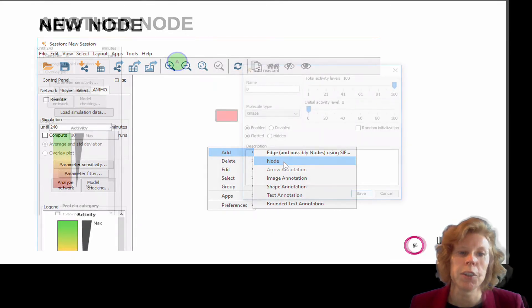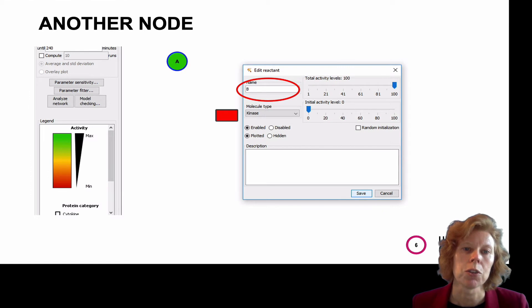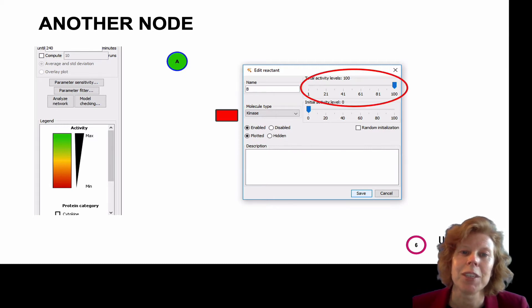Choose Add a Node. The name you can enter here could also be the actual protein name. You can then choose what type of molecule it is. Here I chose Kinase. We can set the total activity levels, and for small networks, you can easily leave that at 100. If you need computational power and have a huge network, you might want to reduce that a little.